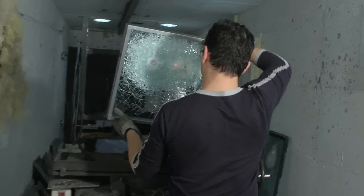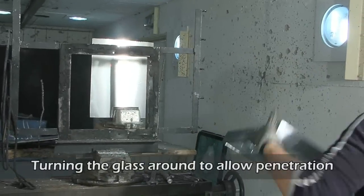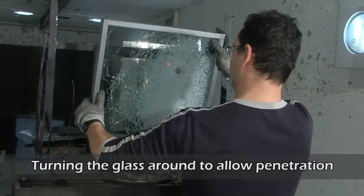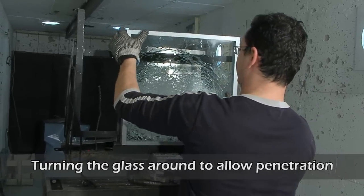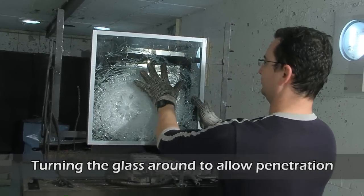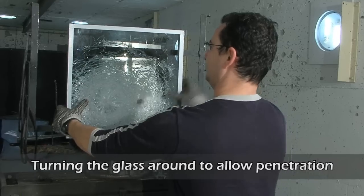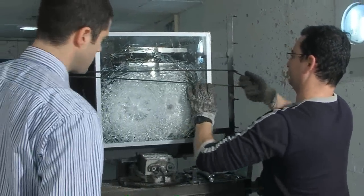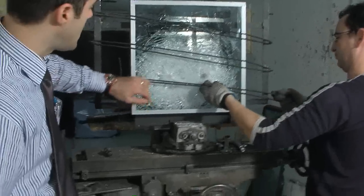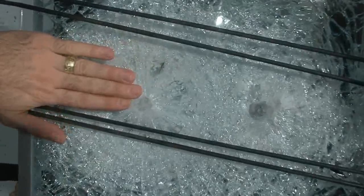Again, we turned the glass around and now we will show a 7.62 bullet penetrating at 730 meters per second right through the glass itself.